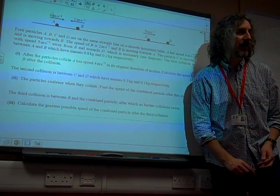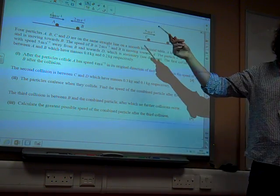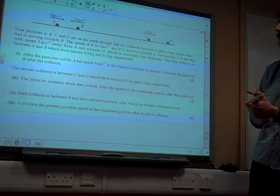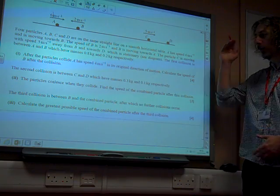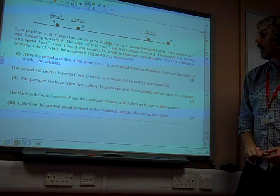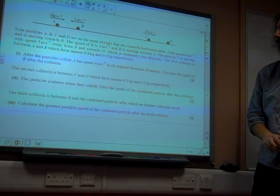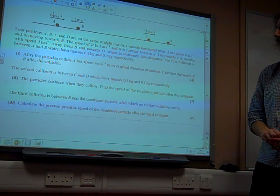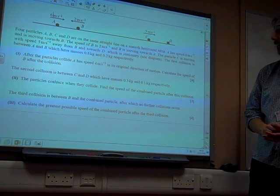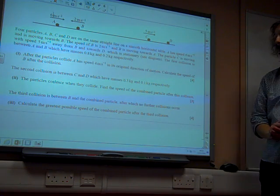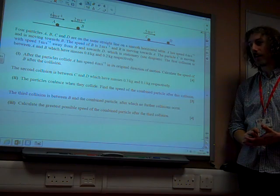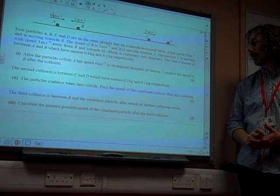Four particles A, B, C, and D. It is question four, and there are four particles, how exciting is that? Four particles are on the same straight line on a smooth horizontal table. Glad they gave us a positive diagram.